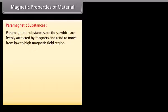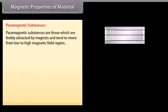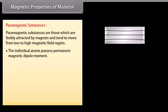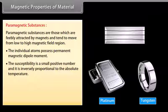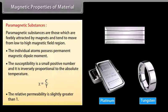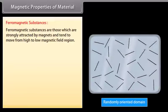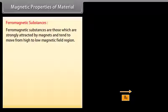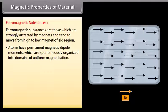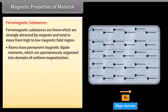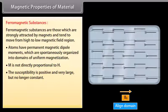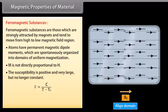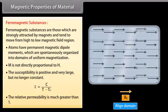Paramagnetic substances are those which are feebly attracted by magnets and tend to move from low to high magnetic field regions. Individual atoms possess permanent magnetic dipole moments. The susceptibility is a small positive number and is inversely proportional to absolute temperature: xi = C / T. The relative permeability is slightly greater than 1. Ferromagnetic substances are strongly attracted by magnets and tend to move from low to high magnetic field regions. Atoms have permanent magnetic dipole moments spontaneously organized into domains of uniform magnetization. M is not directly proportional to H. The susceptibility is positive and very large: xi = C / (T − Tc). The relative permeability is much greater than 1.